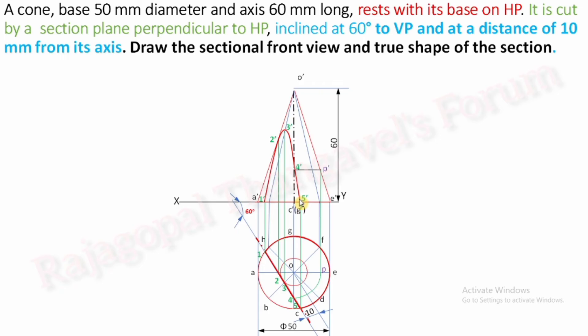Draw a smooth curve through all the dash points. Then convert the remaining portion of the cone into thick lines and complete the sectional front view. This is our sectional front view.